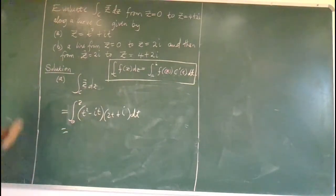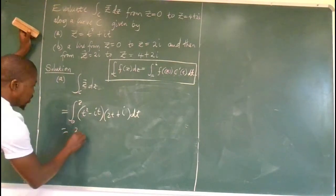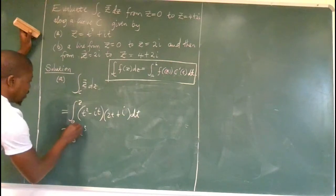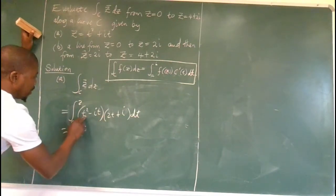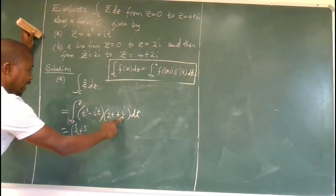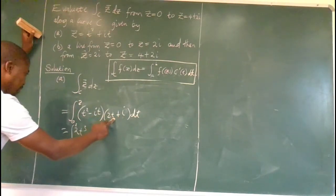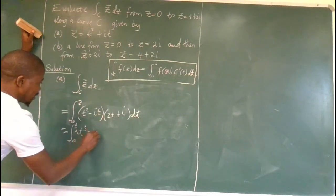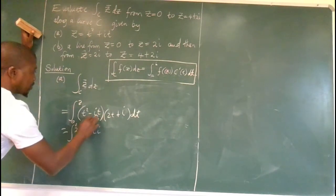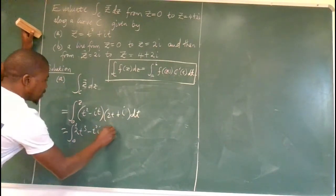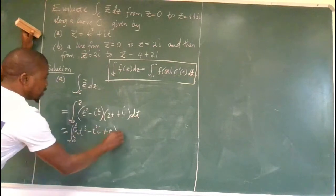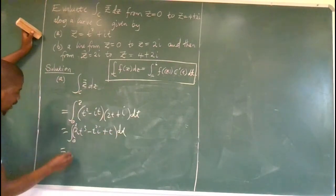So this is pretty easy. We remove brackets. We have 2t cubed. We are not integrating yet. We are removing brackets. Plus t squared i minus 2t squared i. This by that is minus i squared times t squared i. So that would be a positive t. dt.